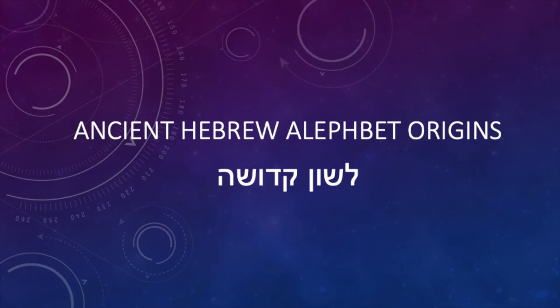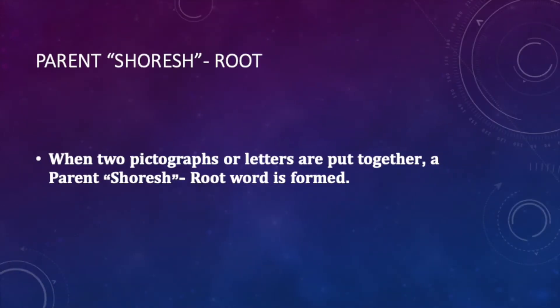Hello everyone, welcome back. This is Akika David. We're going to continue today with our ancient Hebrew alphabet origin series. Today I want to introduce you to what they call the parent root. The parent root, or 'shoresh,' means that you put two letters or two pictures together to create a root. A root is formed by putting two consonants together, like Aleph and Bet, or Kaf and Lamed.